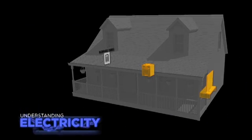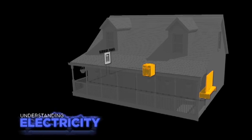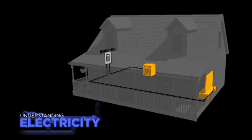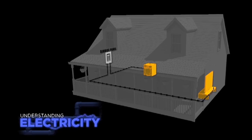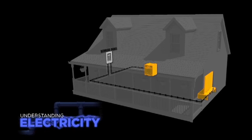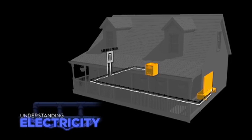Electricity always wants to return to its source to complete a continuous circuit. A typical circuit has two conductors, one that flows from a service panel to an appliance, and one that returns the current to the panel.